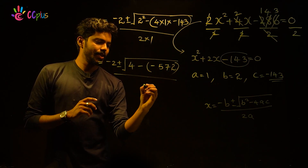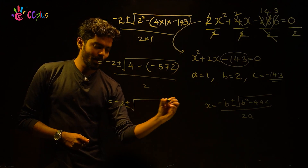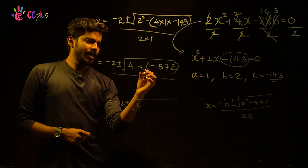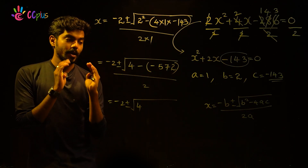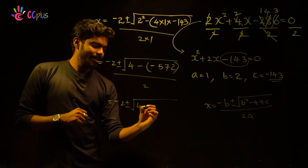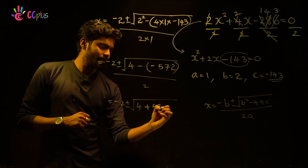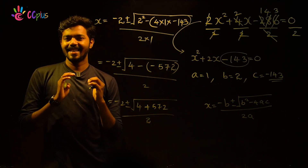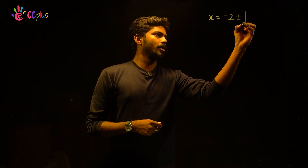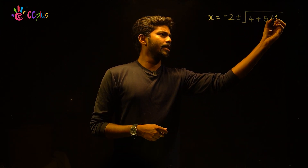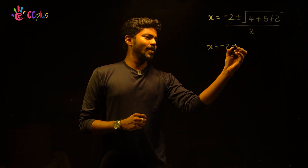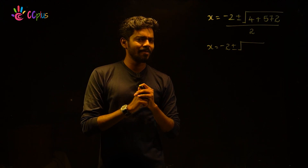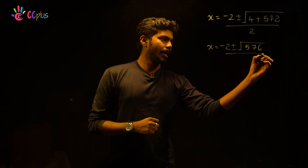Clear. All divided by 2. That equals minus 2 plus or minus root of 4 plus 572, all divided by 2. And 4 plus 572 equals 576. So x equals minus 2 plus or minus root of 576, divided by 2.